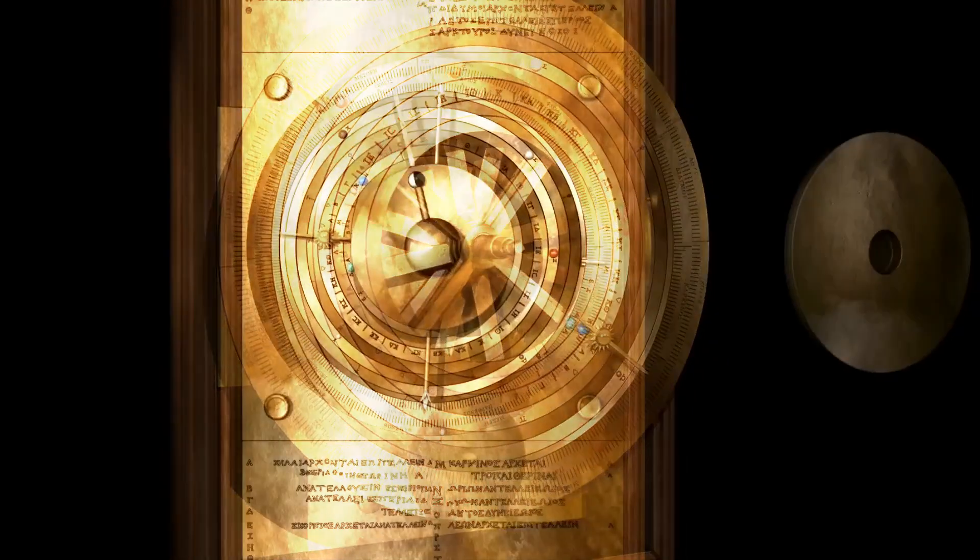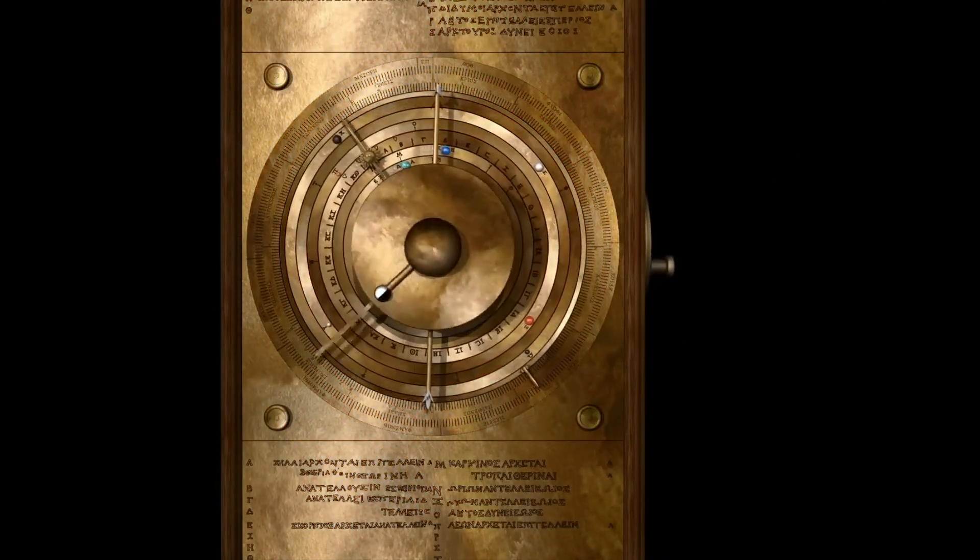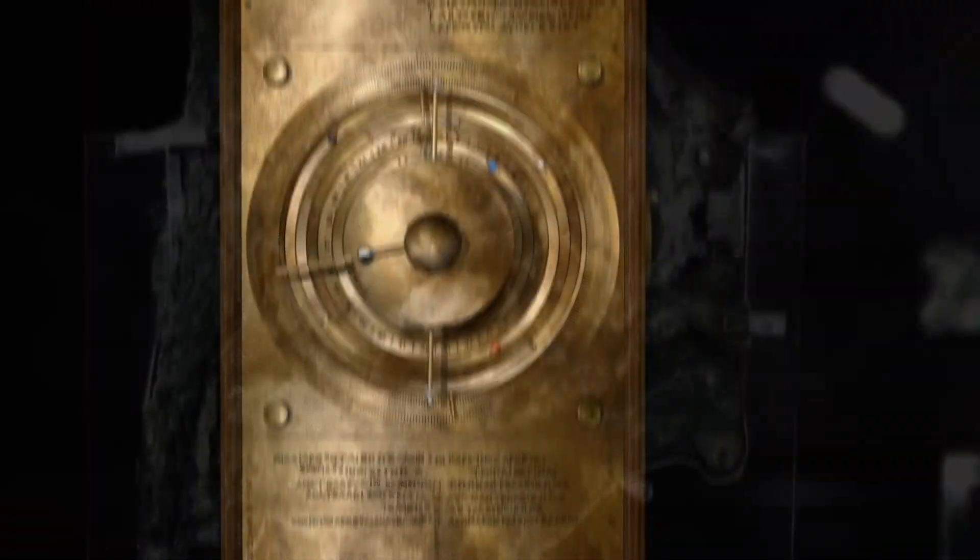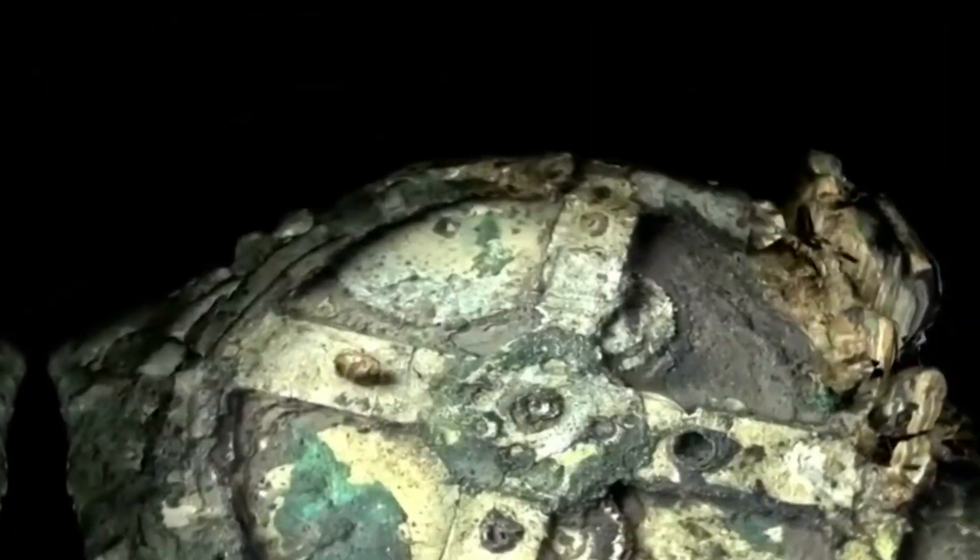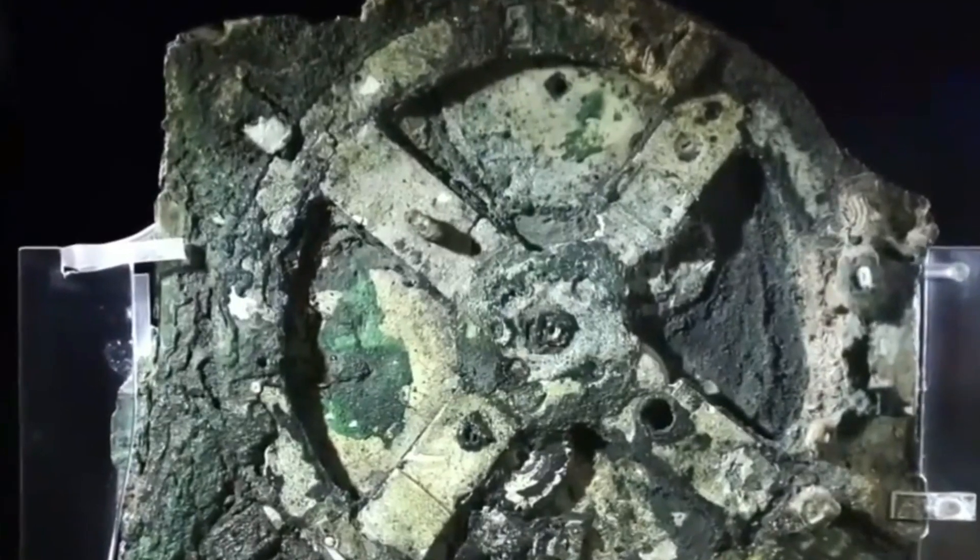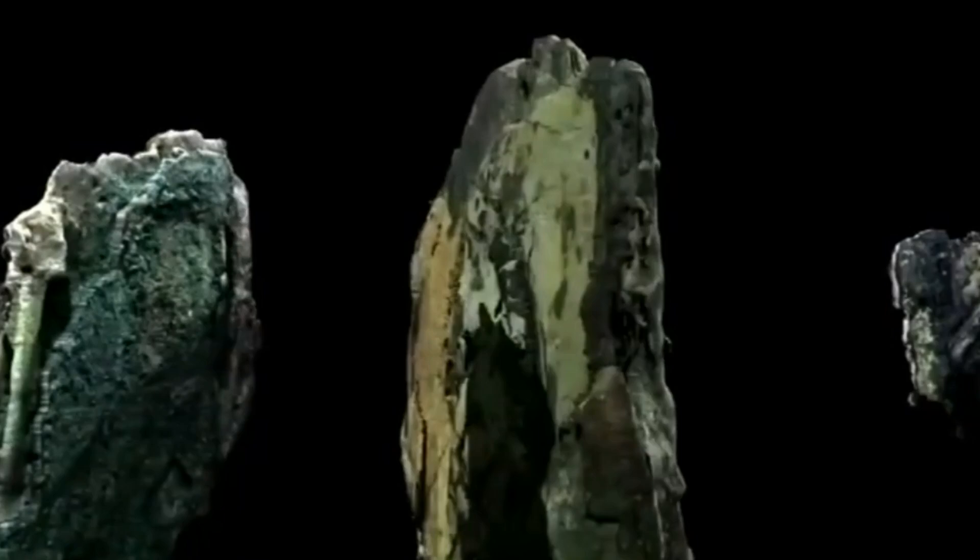The Antikythera mechanism's sophistication points to a blend of disciplines: astronomy, mathematics, and mechanics. Its use of epicyclic gearing, which modeled the planets' apparent retrograde motion, was particularly advanced.